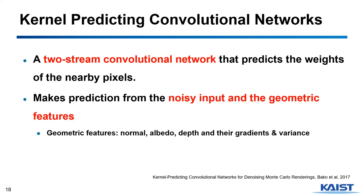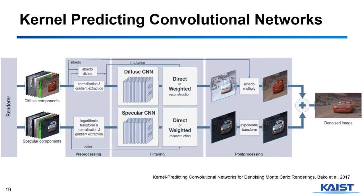The first neural network uses the geometric feature for denoising. This kernel-predicting convolutional network borrows an idea from the traditional methods based on filtering with kernels. The two-stream convolutional network takes a noisy input and the geometric features and predicts the kernel weights for nearby pixels. The noisy input is denoised by applying the kernel to each pixel. Each stream of the network takes the input image separated into diffuse and specular components, which boosts the denoising performance.